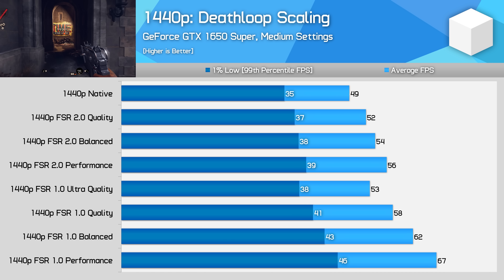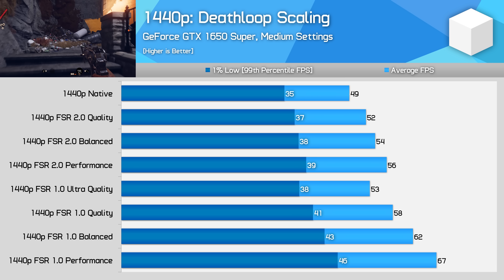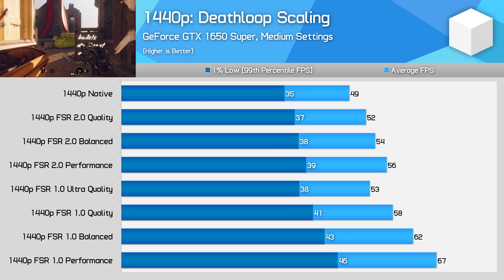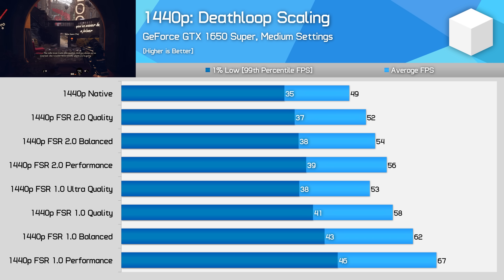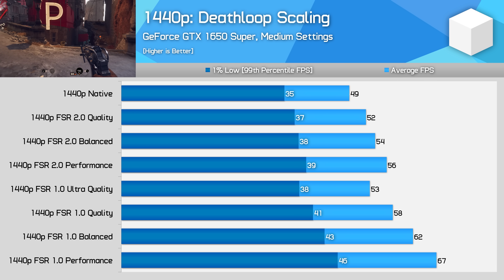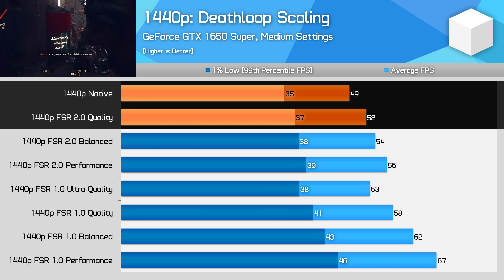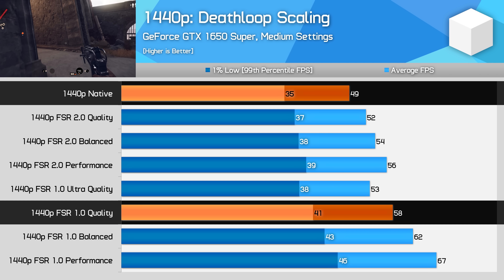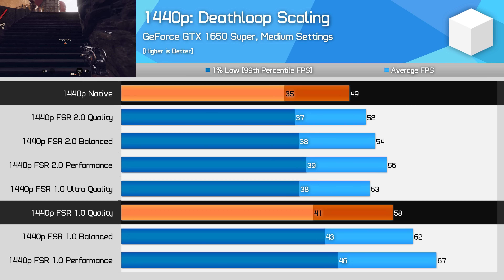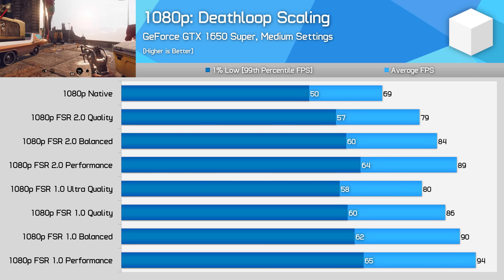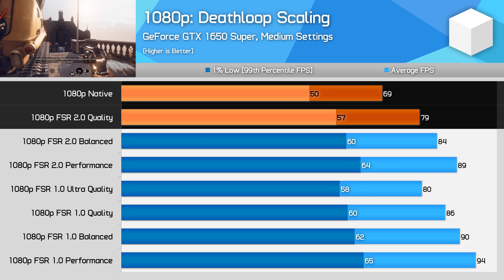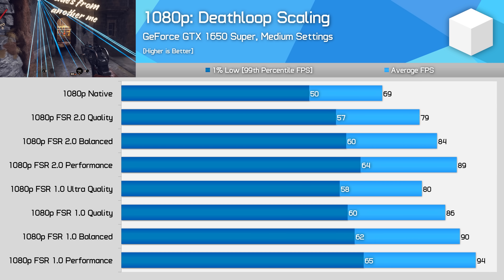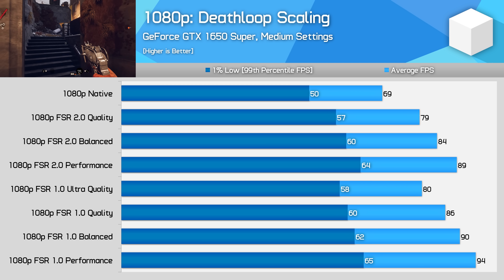Another entry-level GPU I tested is NVIDIA's GeForce GTX 1650 Super — a Turing-based product that doesn't support DLSS as it lacks tensor cores. Like the RX 570, the GTX 1650 Super doesn't benefit hugely at 1440p with either FSR 2.0 or FSR 1.0, and even medium settings is a bit of a stretch. FSR 2.0 quality mode was only 6% faster than native, with performance mode barely improving on that. In comparison, FSR 1.0 delivered much better frame rates. At 1080p, gains were more acceptable — FSR 2.0 quality mode was 15% faster than native, and performance mode increased that to 29%. FSR 1.0 is definitely faster on this entry-level GPU, but FSR 2.0 is usable.